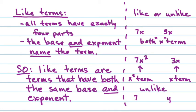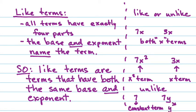How about seven and seven Y? They're unlike, aren't they? But they both have a seven in them — doesn't that make them like terms? No — the base and the exponent tell you if they're like terms or not. The seven just tells you how many you have. So the seven is a constant term, and this one is a Y term. If you think about the names of terms as you look at them, it will make your life so much easier.